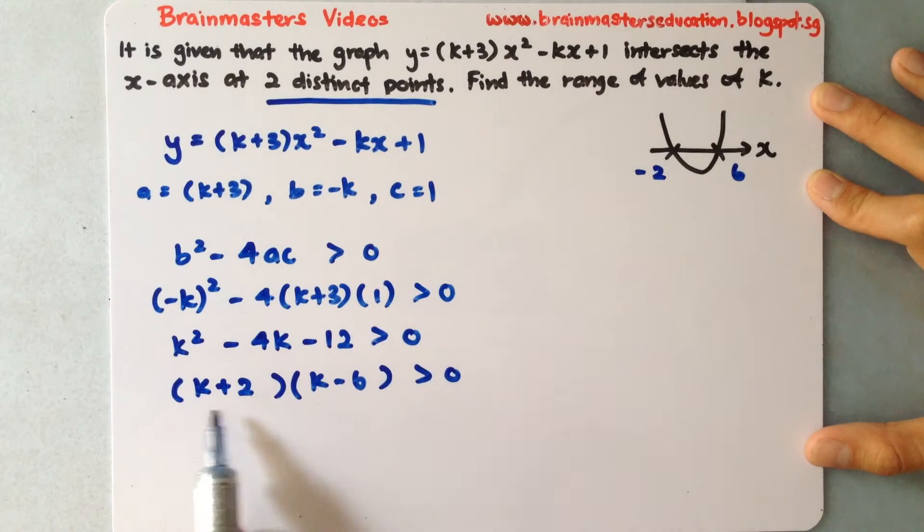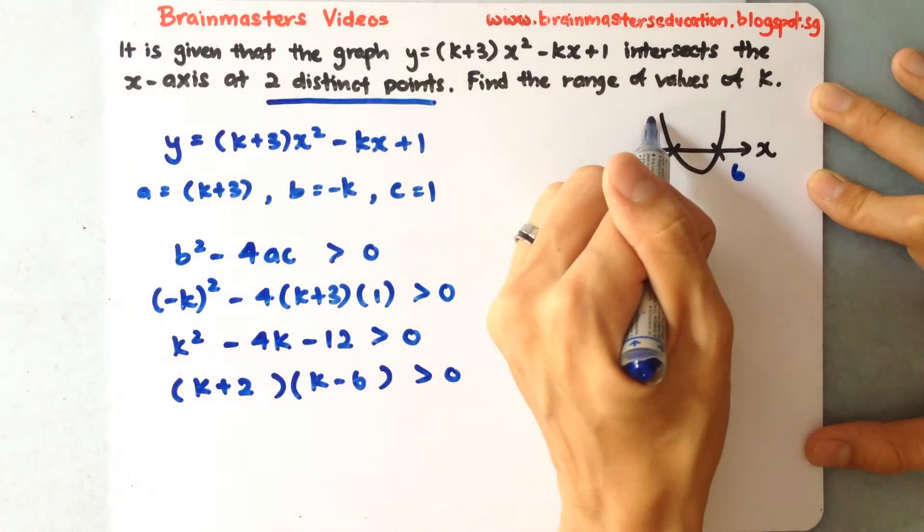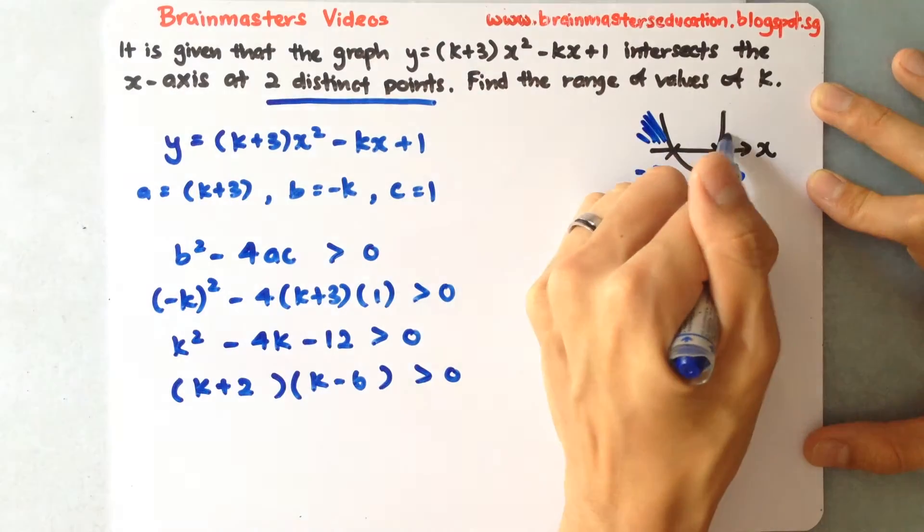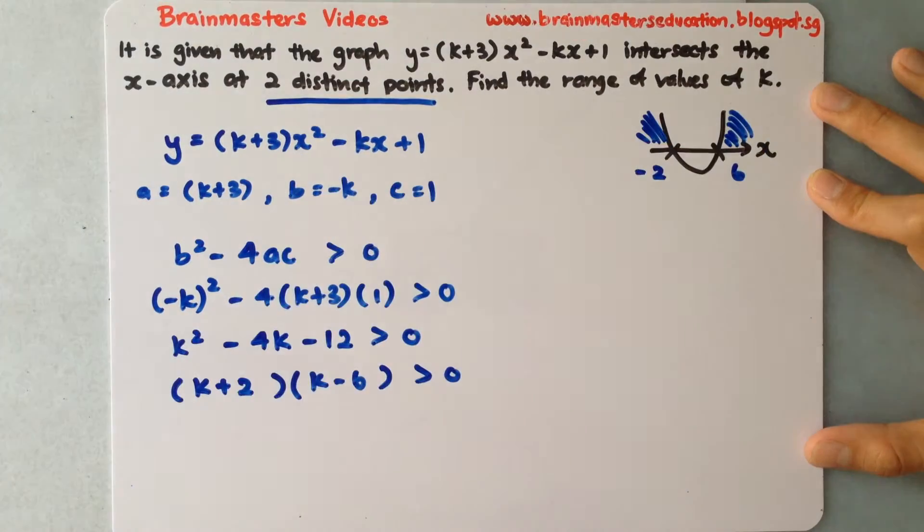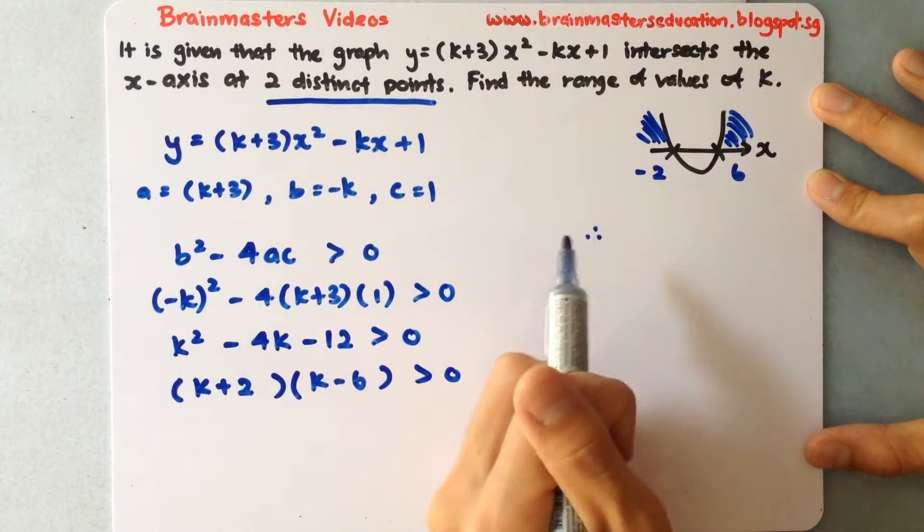So what do they say? They actually want the graph that will be more than 0, that means above the x-axis. So where will it be? It will be here at this point, the shaded one in blue. So with this therefore I will be able to find out my answer.